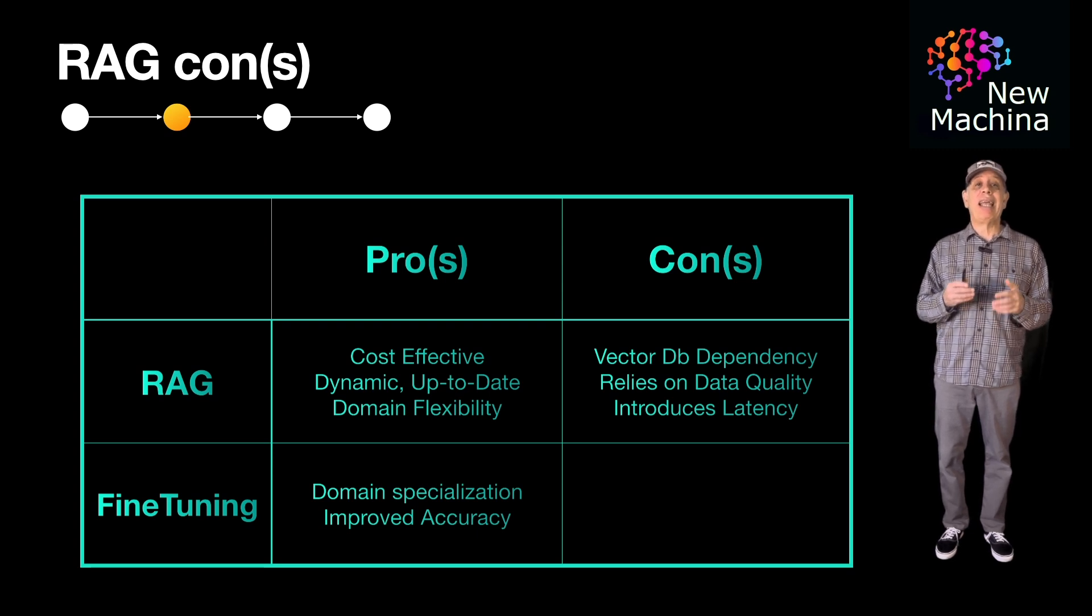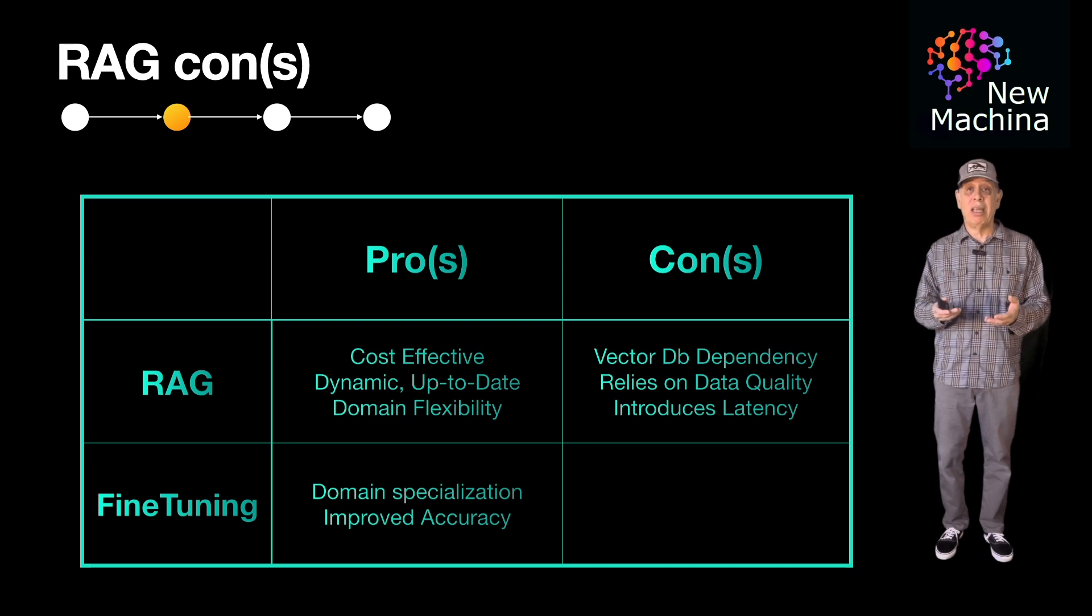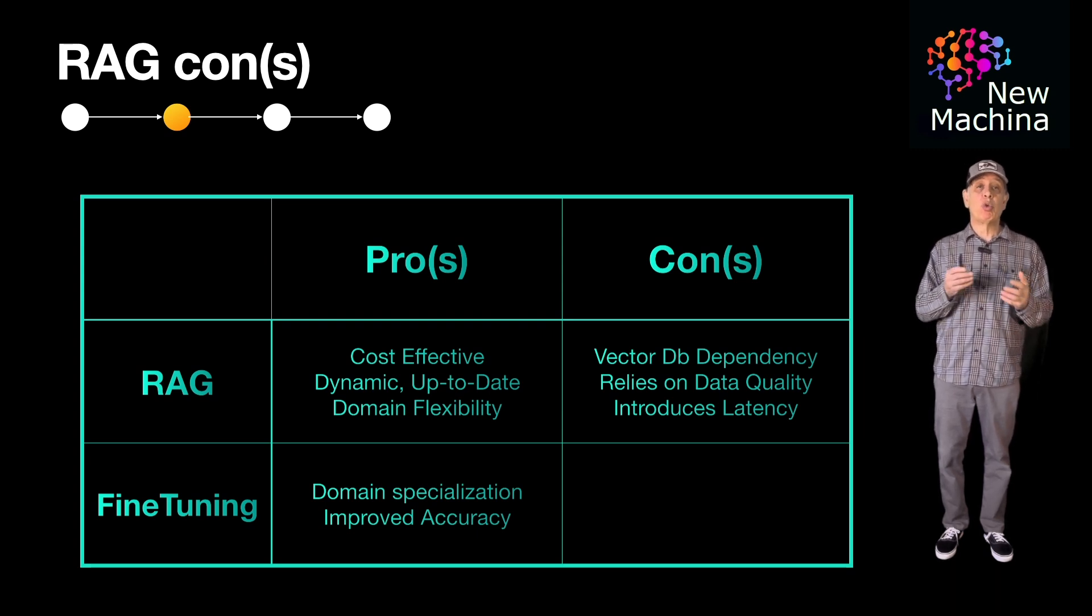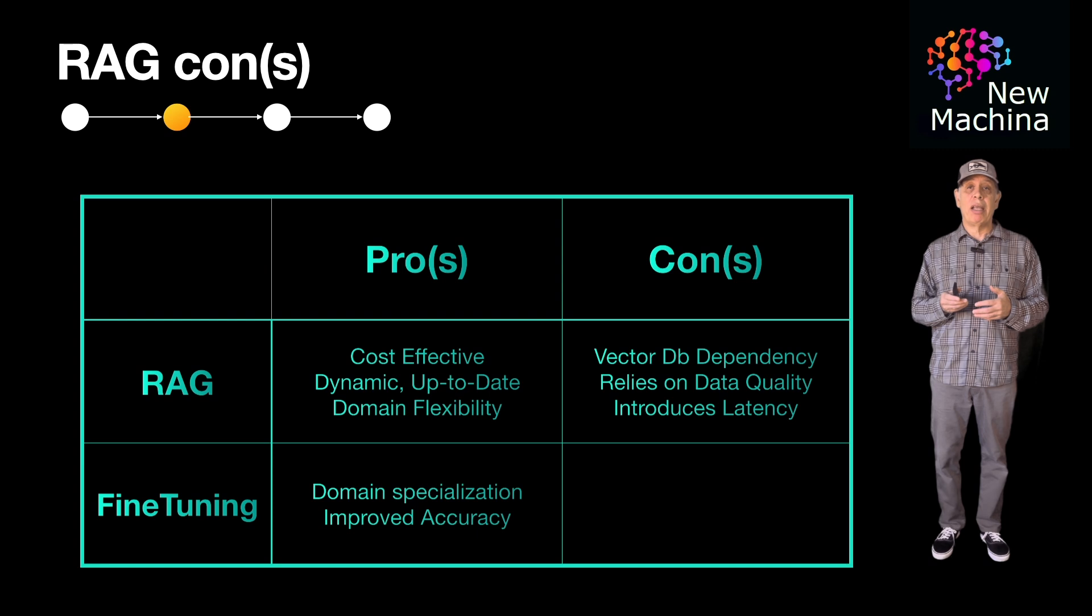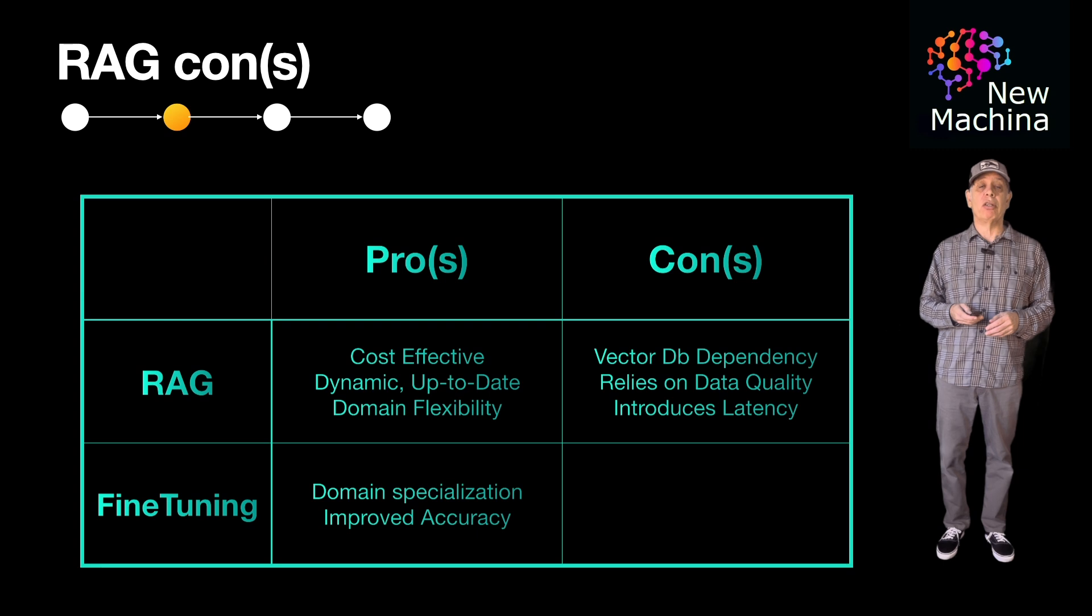The second is latency issues. RAG systems introduce additional latency when they perform real-time retrieval from the vector database, which may introduce additional time in the overall user request response operation.